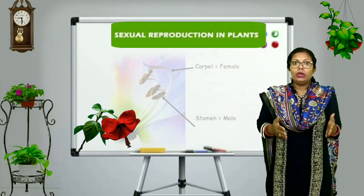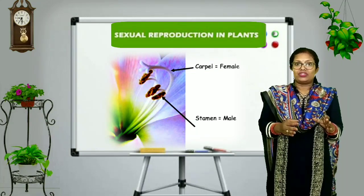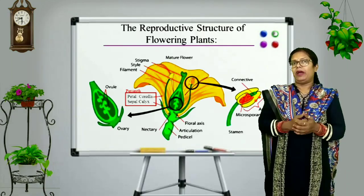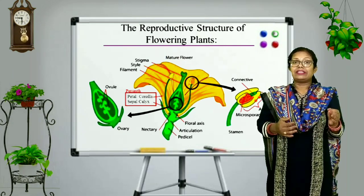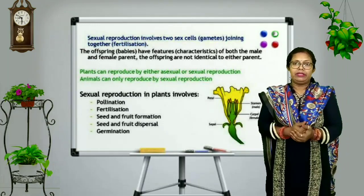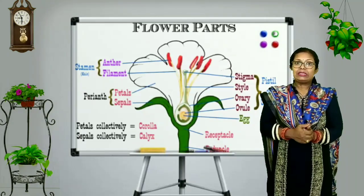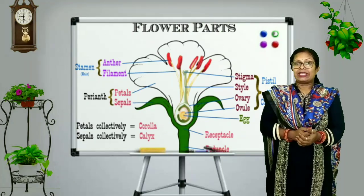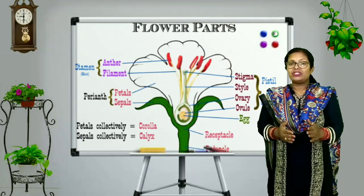Flowers are the very attractive and colorful structures of plants, and these are the reproductive organs of the plants. Why are these the reproductive organs? Because flowers possess reproductive cells or gametes — male gametes or female gametes — and in this way they participate in sexual reproduction. So if we want to study about sexual reproduction, we will have to study about the structure and function of a flower.